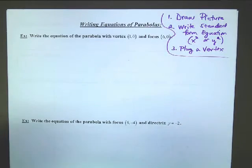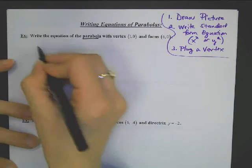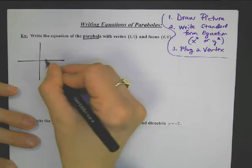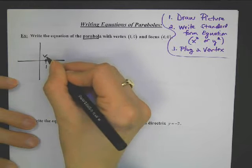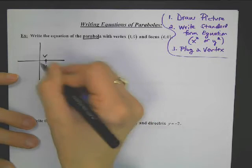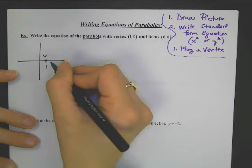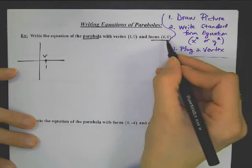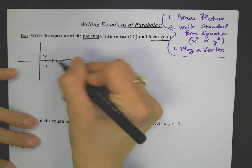Okay, let's take a look at this. This first one is the equation of a parabola. The vertex is (1, 0) — V for vertex. I still don't know if it's opening up, down, left, or right; that's not enough information. But it does tell me the focus is at (6, 0).